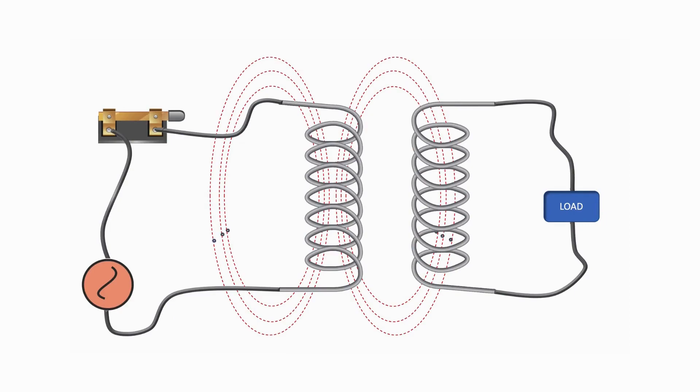Inductive coupling occurs when two nearby electrical conductors, known as primary and secondary coils, exchange energy through an electromagnetic field. But how can the two nearby conductors or coils exchange energy without touching each other?